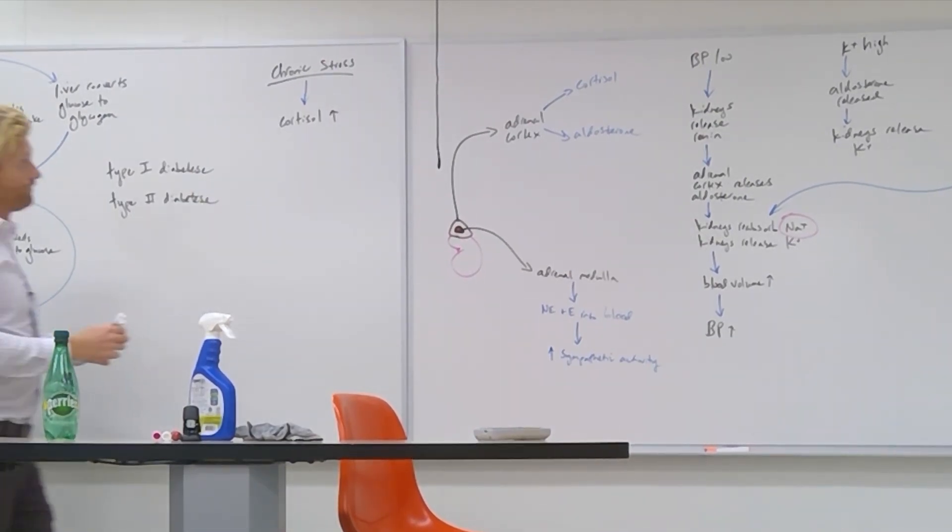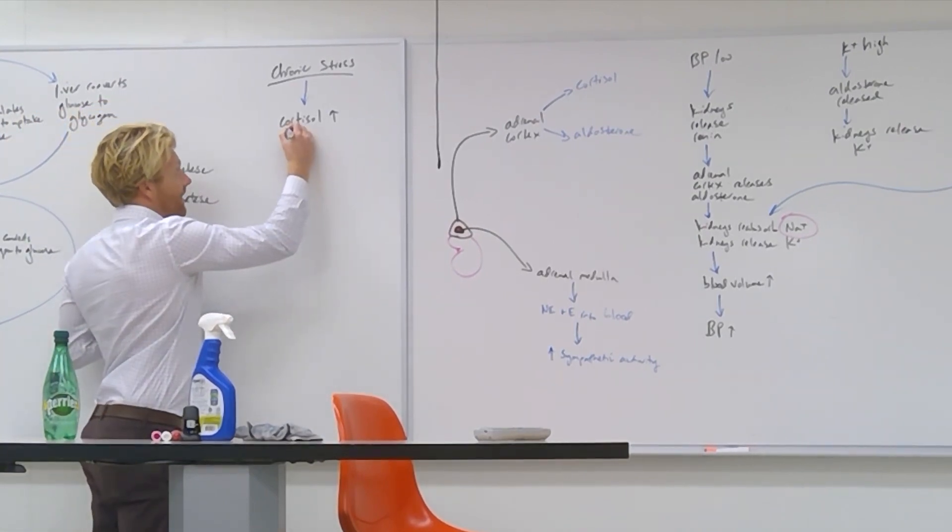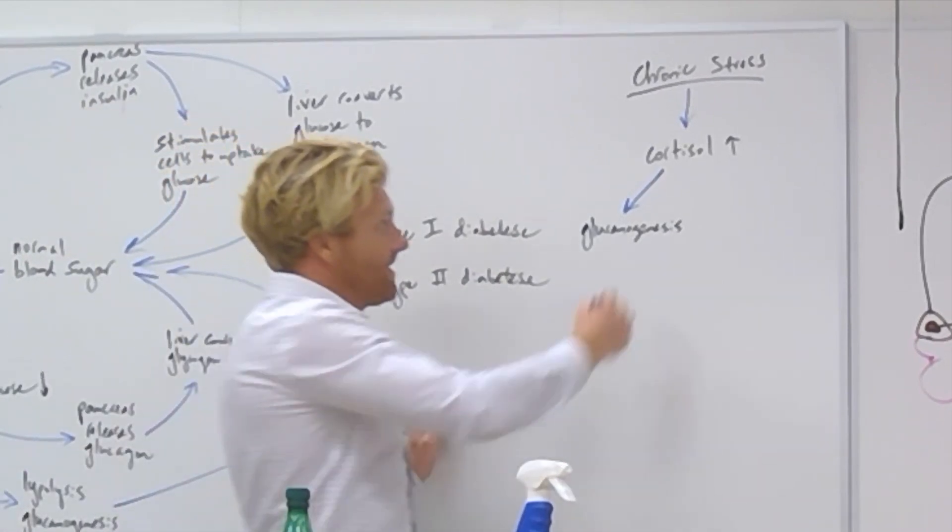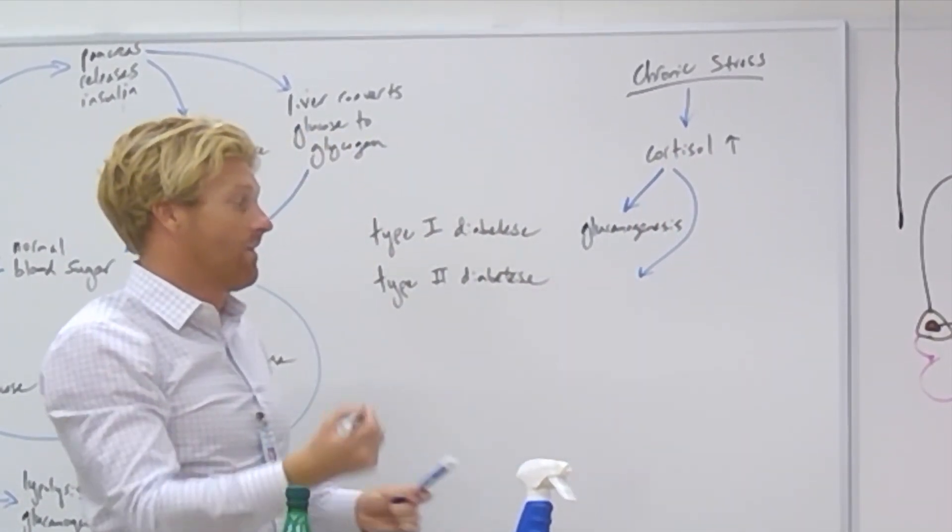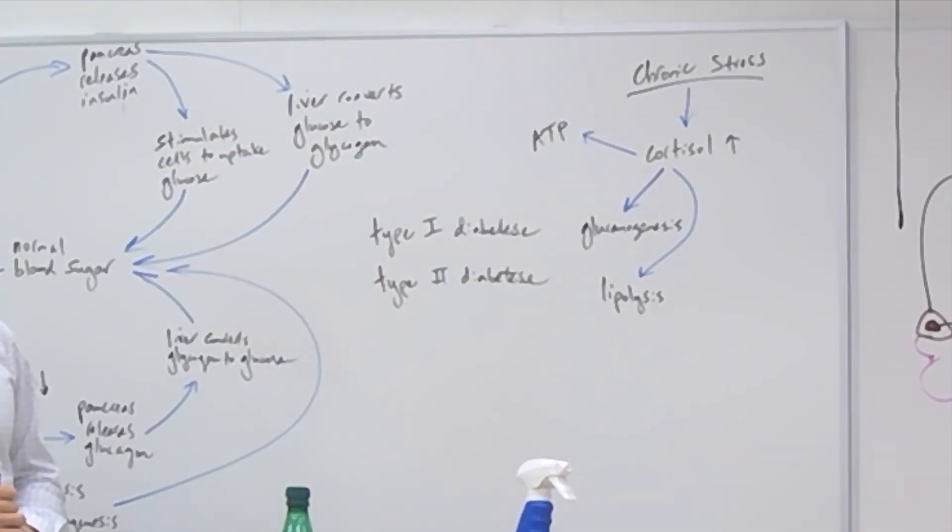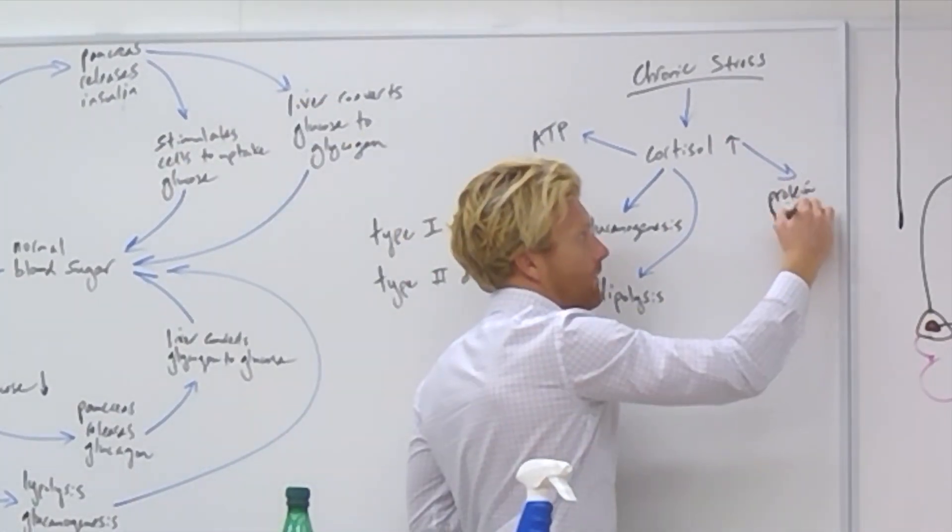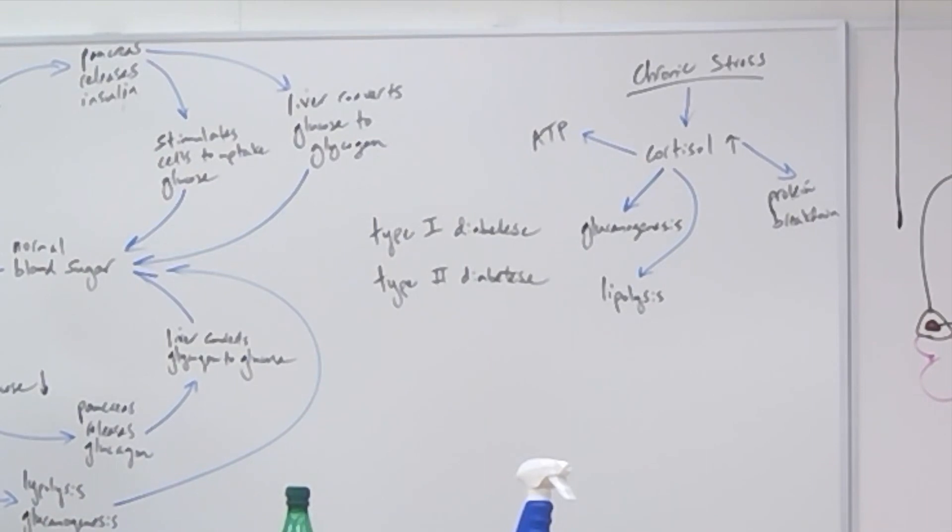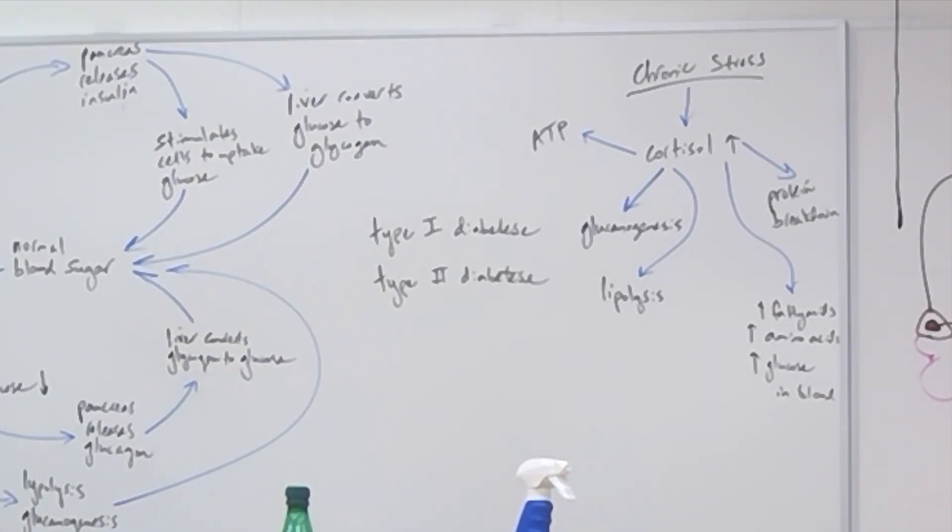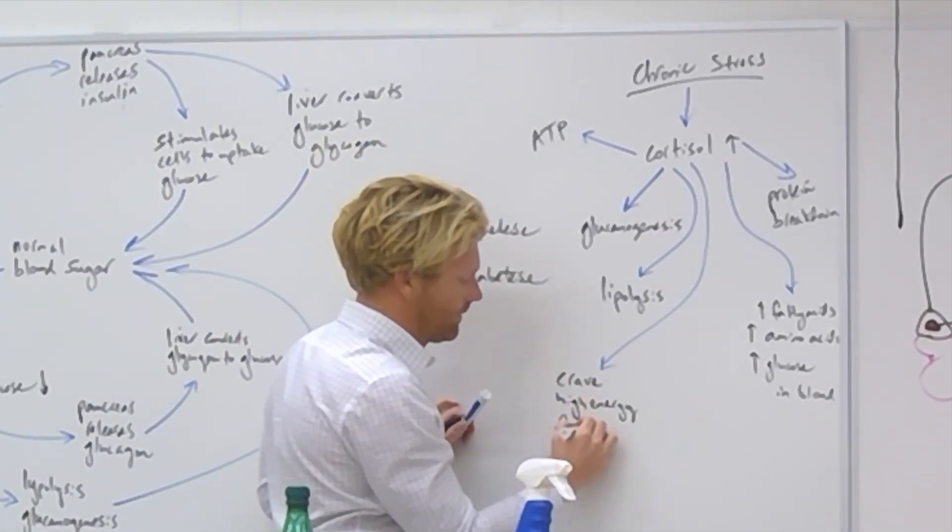So this does a bunch of different things. The third thing that it does is that it encourages gluconeogenesis. The other thing that it does, it encourages lipolysis. It's also going to encourage the production of ATP. It's going to encourage the breakdown of proteins. It's also going to raise the amount of things like fatty acids, glucose, and amino acids in the blood. It's also going to mess with your hunger. What kind of foods do you think you're going to crave? High energy foods or low energy foods? Just based off of this stuff. High energy foods.